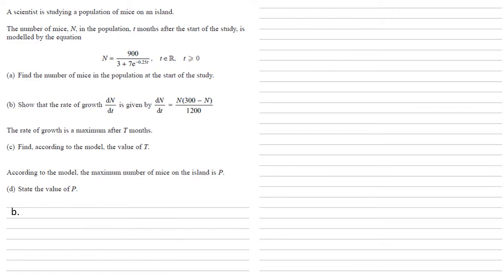We want to show that the rate of growth dn by dt is given by dn by dt equals n times 300 minus n, all over 1,200. We've got our formula for n and we want to differentiate this. As this is a fraction with a function of t on the bottom, it's easier to rewrite it as a negative power instead of a fraction.